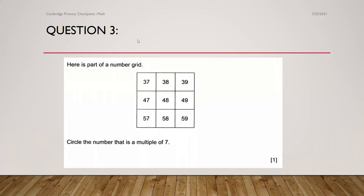Third question: here is part of a number grid — circle the number that is a multiple of 7. A multiple of 7 means a number in the 7 times table. We'll start counting: 7, 14, 21, 28, 35, 42, 49. I can see 49 is here in the grid — it's in the 7 times table and 7 times 7 is 49. So 49 is the correct answer and you will get one mark for this.